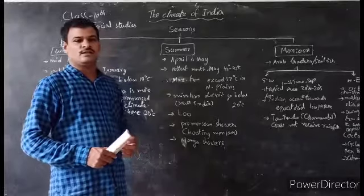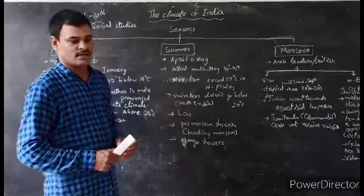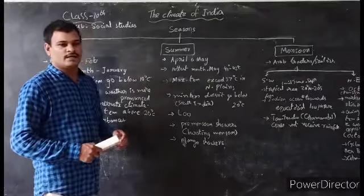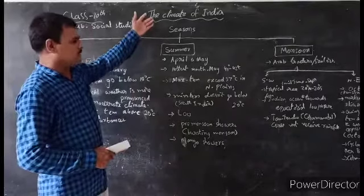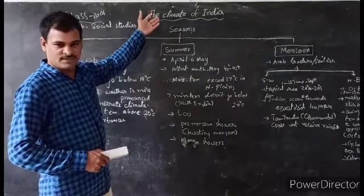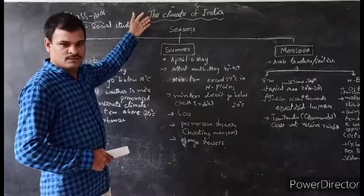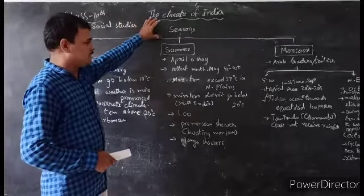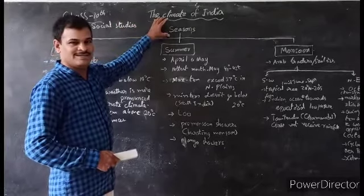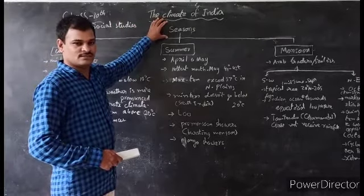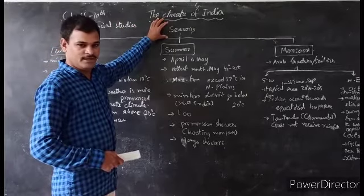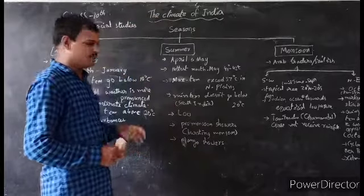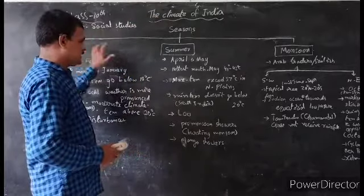Good morning children. In the previous class, we were learning about the climate of India, first part. But now, today in this lesson, we are reading about the seasons of India. The seasons of India are divided into three categories: first one is winter, second one is summer, third is monsoons.